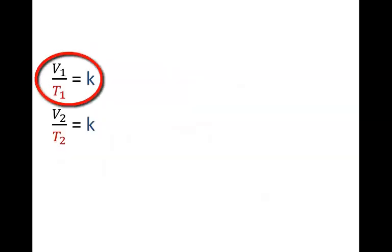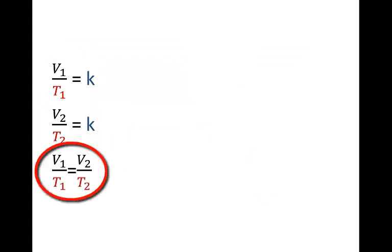So V1 over T1 will equal a constant and so will V2 over T2. So they equal one another. V1 over T1 equals V2 over T2. And we can use this equation to solve for unknowns. Let's do that.